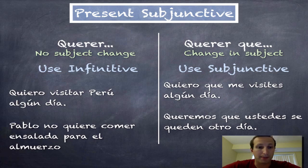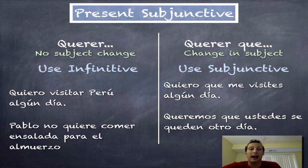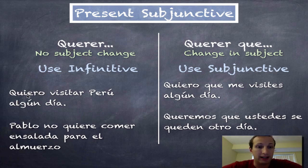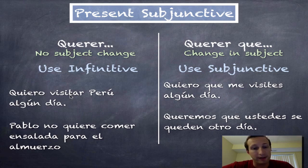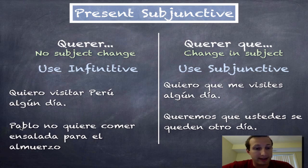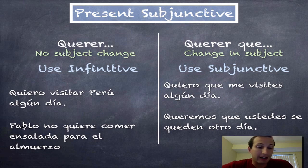For example, 'yo quiero visitar Peru algún día' — I want to visit Peru someday. That format is just 'quiero,' the indicative form of querer conjugated for the subject (I), followed by 'visitar,' the infinitive, and then whatever else follows. Another example: 'Pablo no quiere comer ensalada para el almuerzo.' Pablo is the subject for both verbs — he doesn't want to eat the salad.